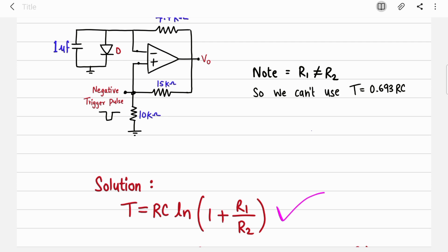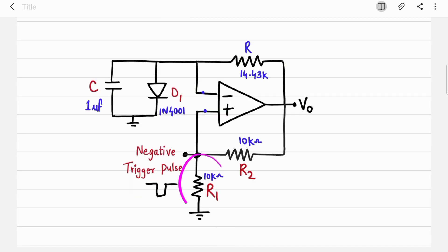So you have to use this equation: RC ln(1 + R1/R2). Now in many books you will see R2/R1 instead of R1/R2 - it depends on your diagram. If you see my diagram, my R1 is always connected to the ground, and that's why in my equation there is R1/R2. If in some diagrams in some books R2 is connected to the ground, then in their equation it will be R2/R1. So don't get confused.